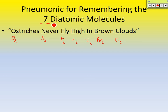There's one more mnemonic. I don't know if it's school appropriate, but I did learn it when I was learning chemistry. It's 'have no fear of ice cold beer.' That will also help you remember the seven diatomic elements, although I'd rather you remember 'ostriches never fly high in brown clouds' — it's more school appropriate and works just as well.